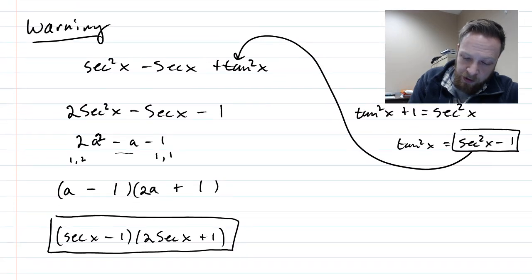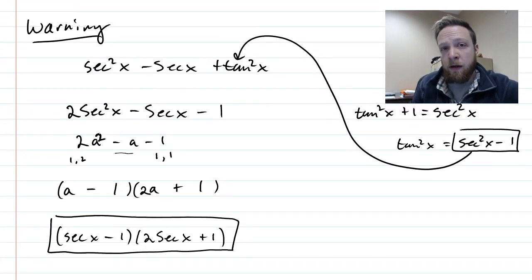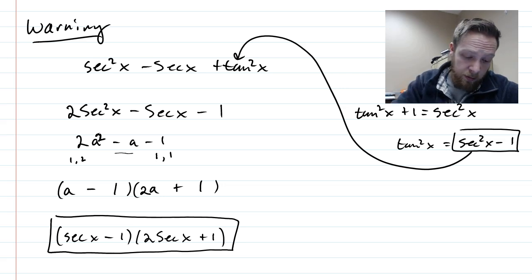So we had to do a couple things. We're putting it all together. We had to substitute using a Pythagorean identity. We had to substitute, instead of secant, think of it like x, factor normally, and then put secant back in. And so you're going to have to do this a lot, especially when we're solving equations, which is going to be next.